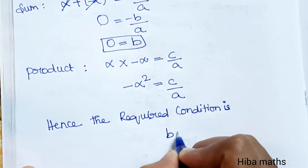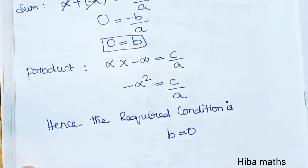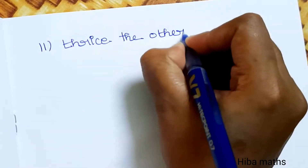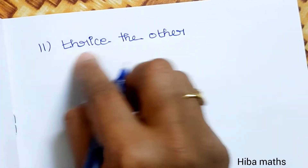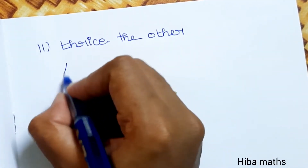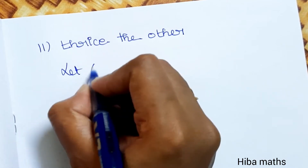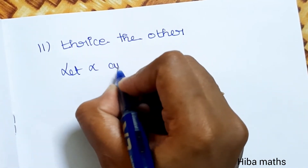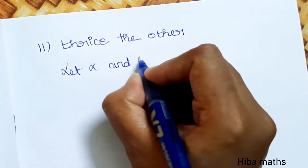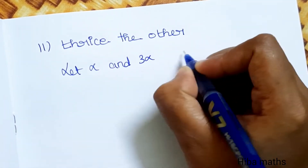Hence the required condition for one root to be the negative of the other is B = 0.